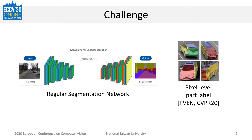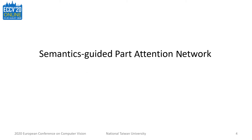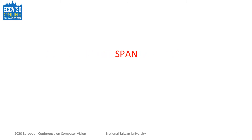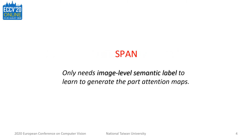To generate part attention maps, it is intuitive to use a regular segmentation network with pixel-level part labels for training. However, such labels are expensive and hard to acquire in real-world scenarios. In this paper, we propose the Semantic Guided Part Attention Network, also called SPAN, which only needs cheaper image-level semantic labels and can learn to generate the part attention maps.